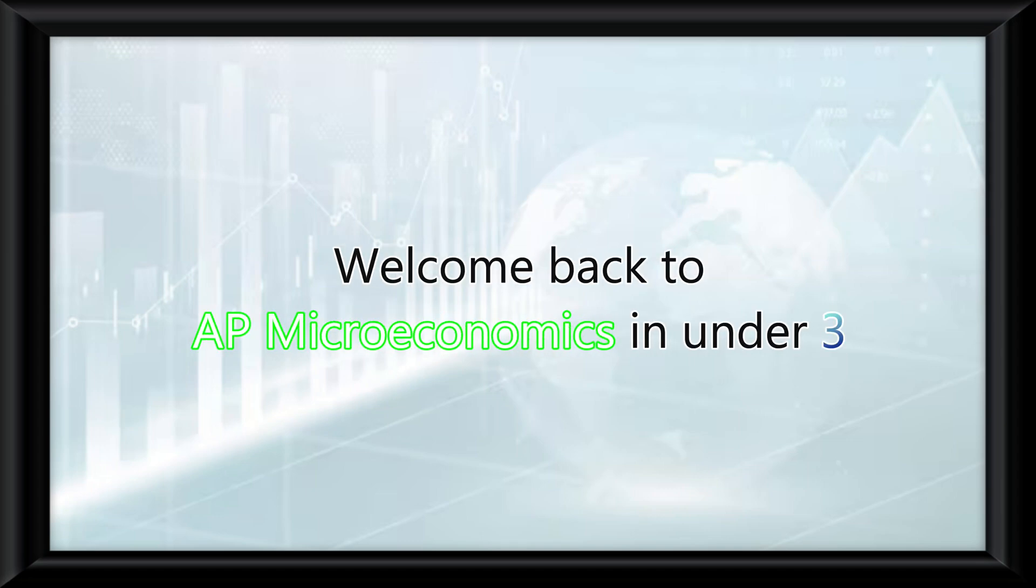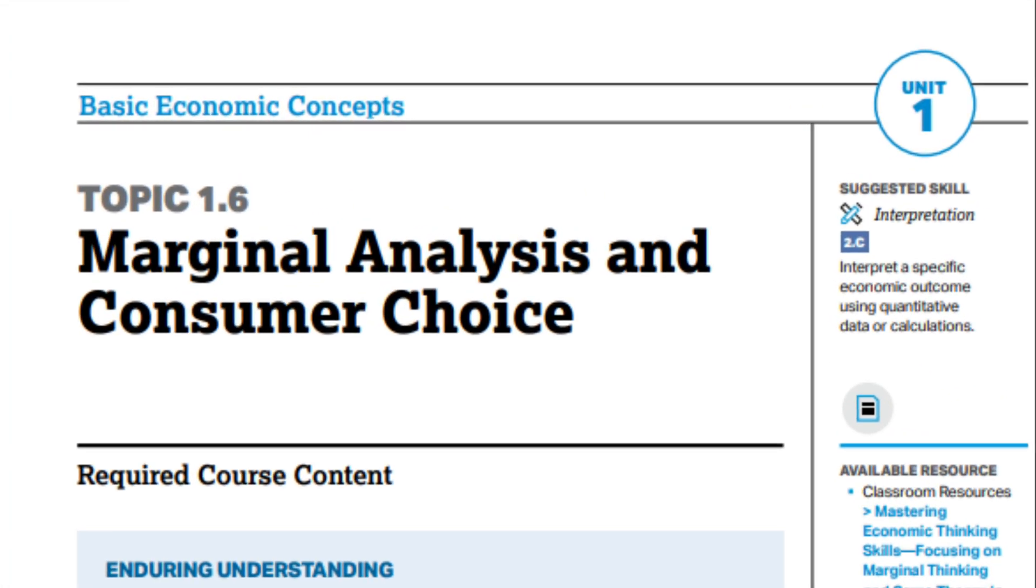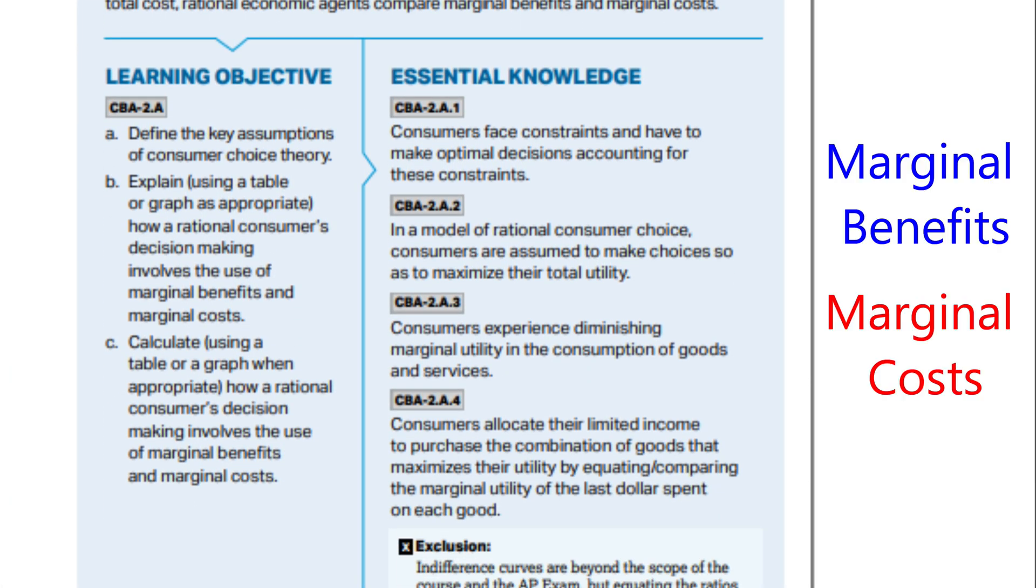Welcome back to AP Microeconomics in under 3 minutes. No time for intros, let's get into it. Topic 1.6 covers marginal analysis and consumer choice, focusing on how rational consumers make decisions by comparing marginal benefits and marginal costs.